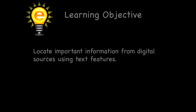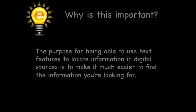Welcome! Our learning objective for this quest is locating important information from digital sources using text features. The purpose for being able to use text features to locate information in digital sources is to make it much easier to find the information you're looking for. It's such a great skill to have and one that you'll use again and again.